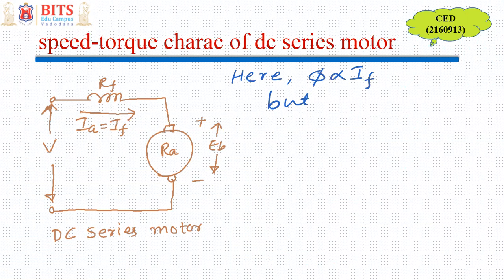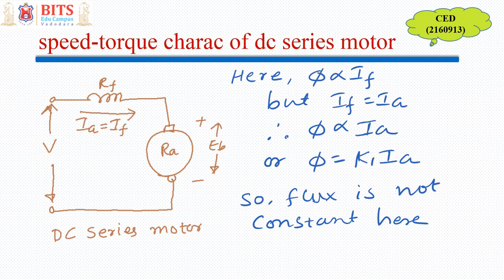The flux is proportional to field current and field current is nothing but armature current. The current which is generally varying with the load. So flux is not constant over here. So with this background, we can see that DC series motor, the key factor over here is field winding connected in series and flux is not constant.